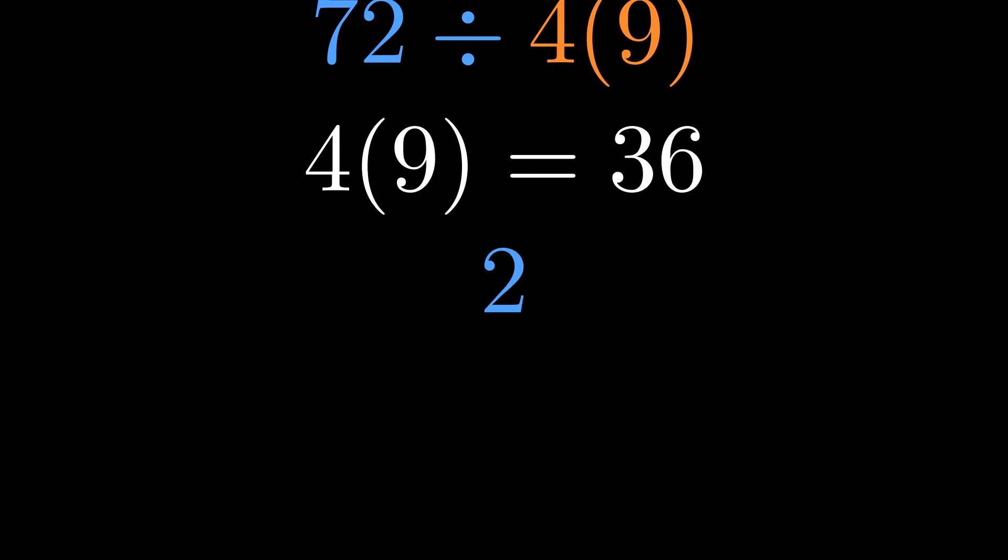That leaves us with 72 divided by 36, which equals 2. That's Team 2's answer. It feels right, it looks right. But is it right? Now let's look at Team 162's argument, and they have math on their side.